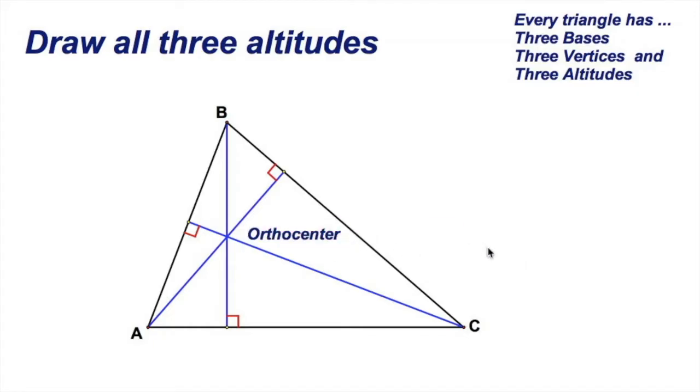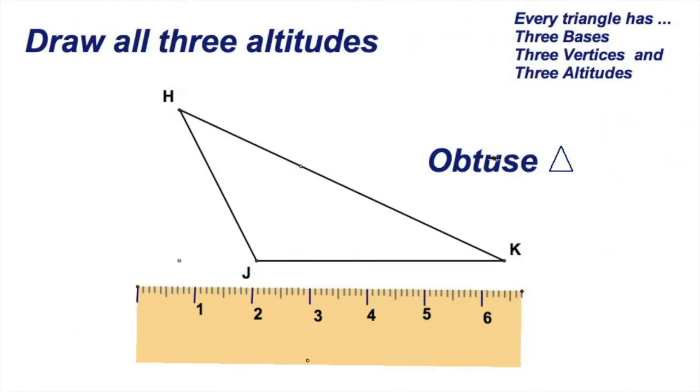Now let's try one that's obtuse. Draw the altitudes on this obtuse triangle. A little bit different this time. Remember we said that the altitude is drawn from a vertex perpendicular to the opposite side or extension of the opposite side.